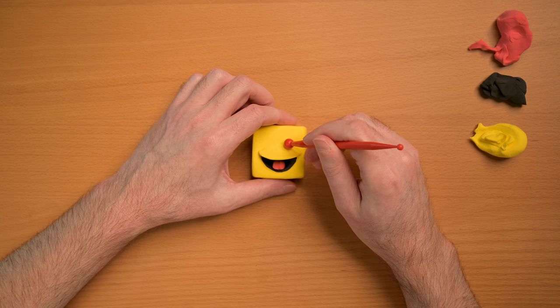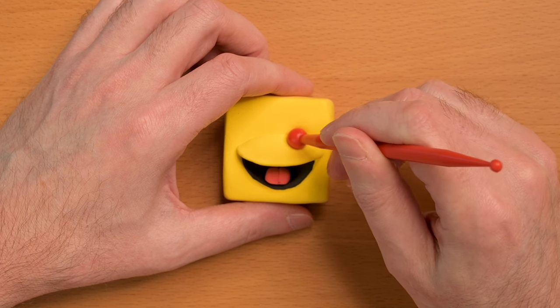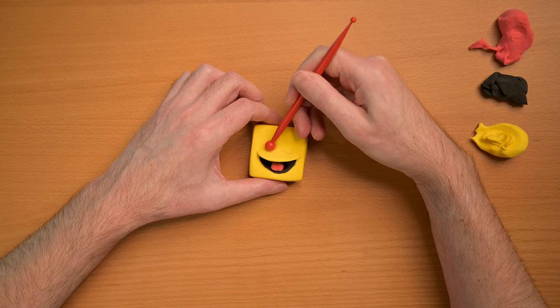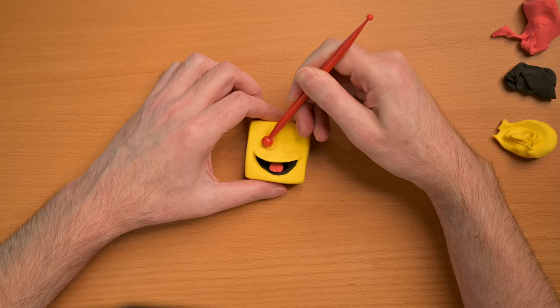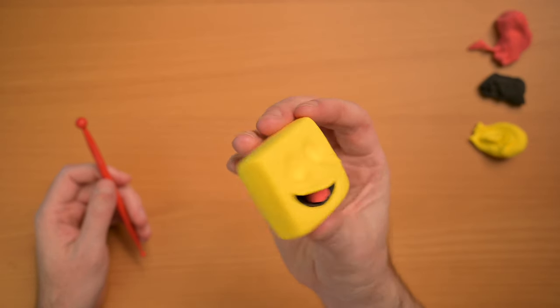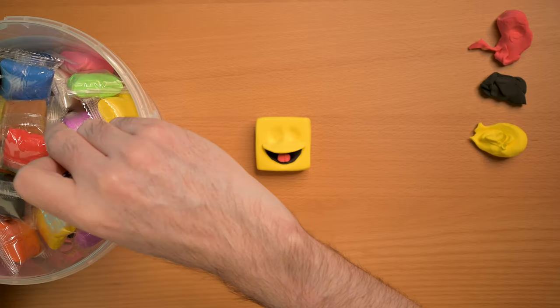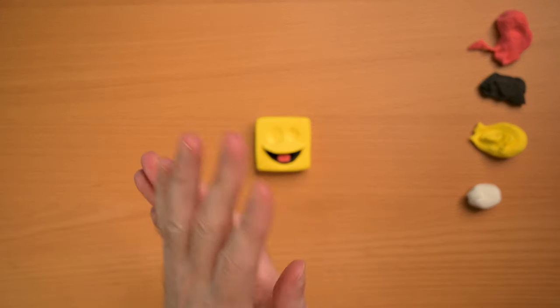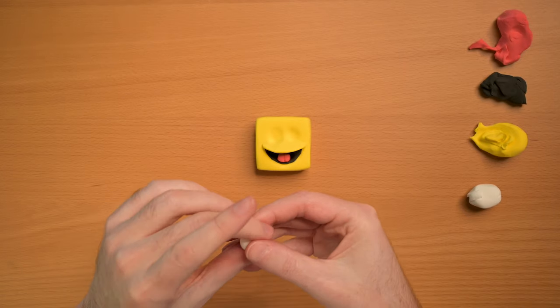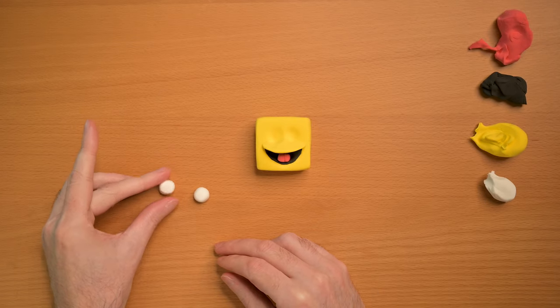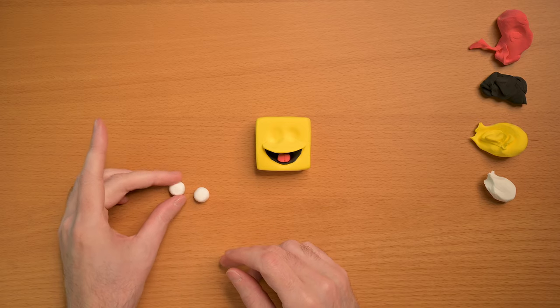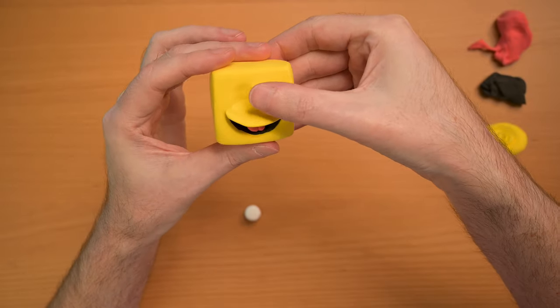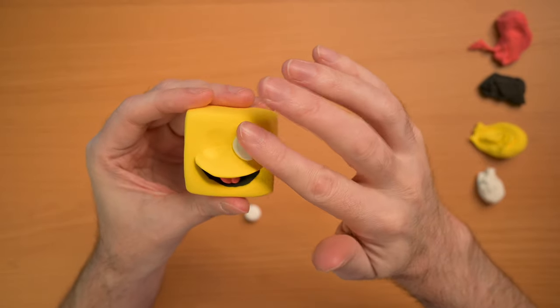We're gonna carve out some space for his eyes. We're gonna keep them nice and big and close together. Keep them low enough on his face. And we're gonna get some white for the whites of his eyes. And we're going to just press them out in little balls. You've got to really check the size here to make sure you don't make them too big or small. And just press them right into the sockets and the whites should be touching in the middle.